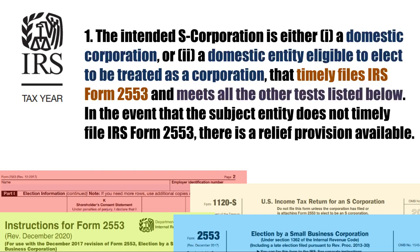Number 1. The intended S-Corporation is either (1) a domestic corporation or (2) a domestic entity eligible to elect to be treated as a corporation that timely files IRS Form 2553 and meets all the other tests listed hereafter. In the event that the subject entity does not timely file IRS Form 2553, there is a relief provision available.